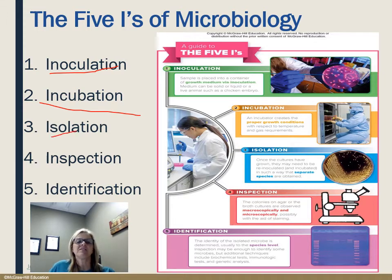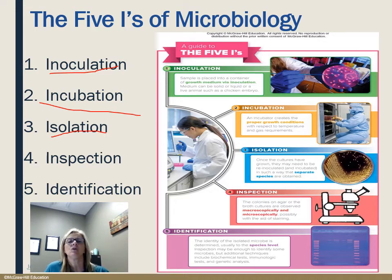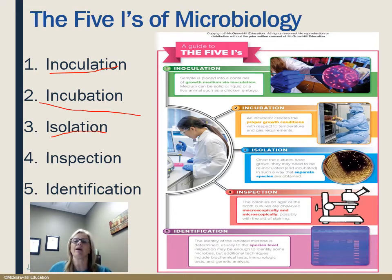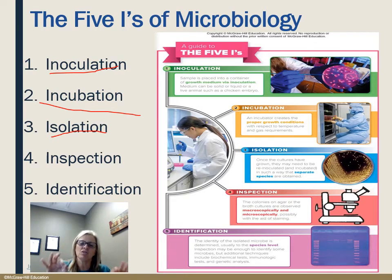The next I is isolation — we want to know what we are treating. If you've ever had strep throat or a UTI, when you go in they take a swab or a urine sample and they grow a culture. Why? Because they want to know exactly what they are treating so they can give you the right medication and make sure they get the dose right. So we want to isolate and get what we call a pure culture. Once the culture has grown, you may have to re-inoculate and incubate in a way that separates species so you can get just the one that is potentially pathogenic.